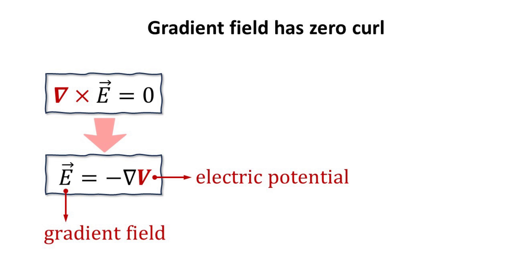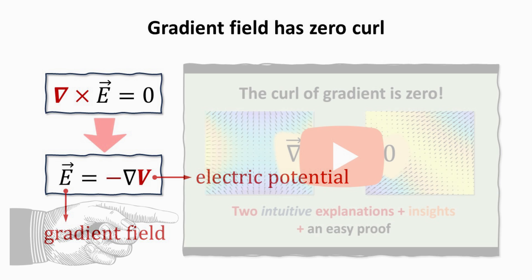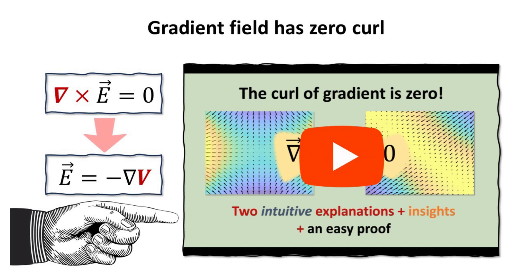Thus, the static electric field is also a gradient field. In other words, the curl of a gradient field is always zero. The scalar field V is called the electric potential. A minus sign is introduced to be consistent with the standard definition of electric potential. Check out this video in the electromagnetism playlist for more about gradient field.